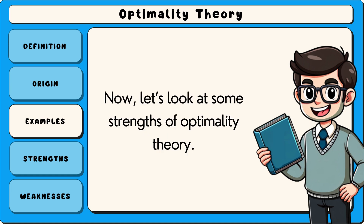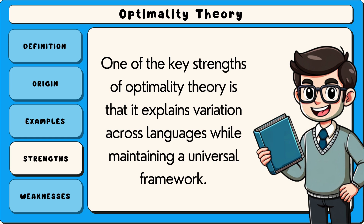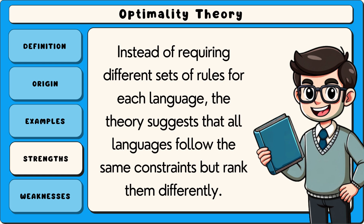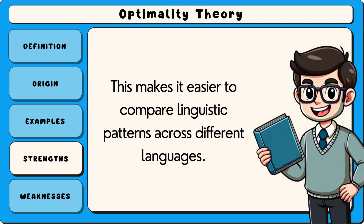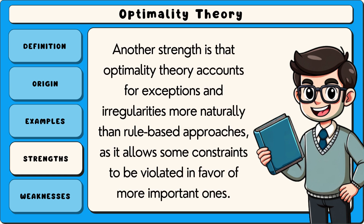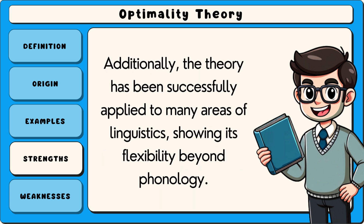One of the key strengths of optimality theory is that it explains variation across languages while maintaining a universal framework. Instead of requiring different sets of rules for each language, the theory suggests that all languages follow the same constraints but rank them differently, making it easier to compare linguistic patterns across languages. Another strength is that optimality theory accounts for exceptions and irregularities more naturally than rule-based approaches, as it allows some constraints to be violated in favour of more important ones. Additionally, the theory has been successfully applied to many areas of linguistics, showing its flexibility beyond phonology.